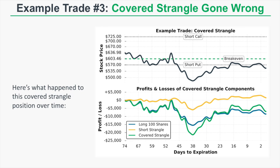Combining the losses, the covered strangle is down nearly $20,000 while just the long shares are down $15,000. This shows that when the stock collapses, a covered strangle has more downside risk than owning 100 shares alone. At expiration, with the short put in the money, the trader would purchase another 100 shares at $570 per share. Alternatively, the trader could close the short put before expiration to avoid taking on more shares.